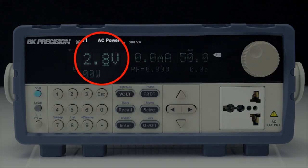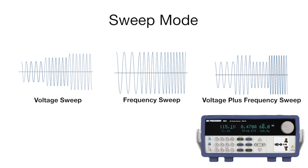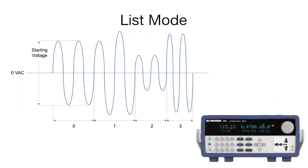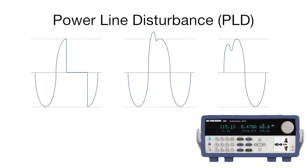Programmable voltage and frequency. Sweep mode settings for sweeping voltage, frequency, and voltage with frequency. List mode for generating complex sequences with varying amplitude and frequency. Extended list mode supports a built-in power line disturbance, also called PLD simulator.